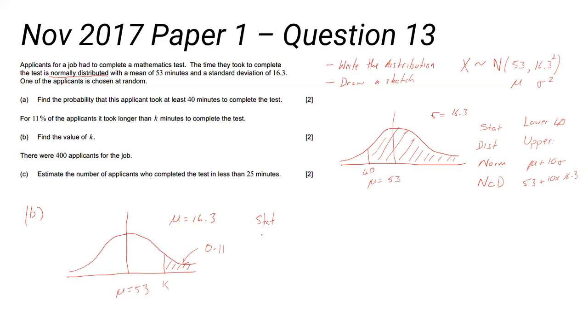Exactly the same approach: we go to stats mode, we go to distribution, we go to normal, but this time we go to inverse normal. This is your area - the area is the percentage we're looking for, it's the same as the shaded area on the diagram. And it's a right tail because the area we're looking at is at the right hand side of the graph. So that's the settings for that.